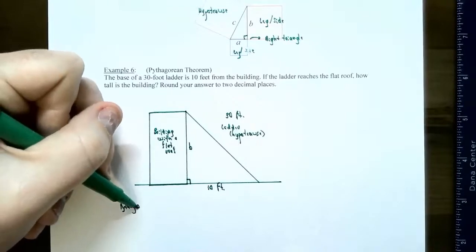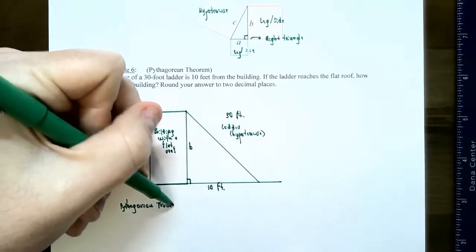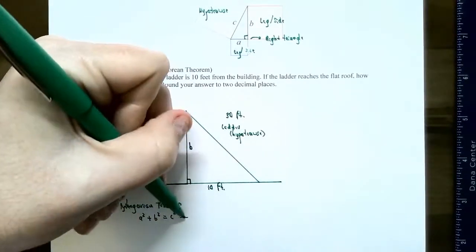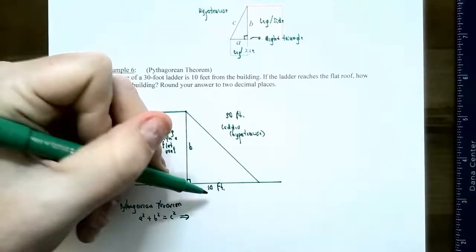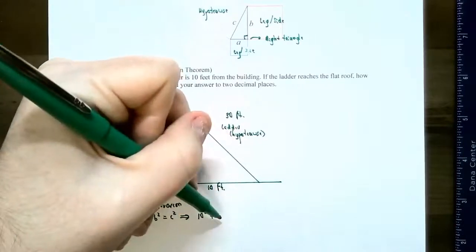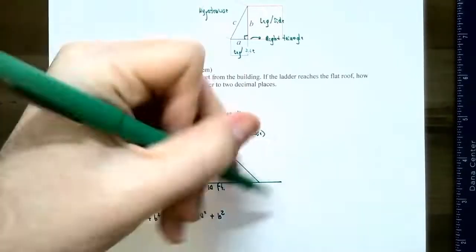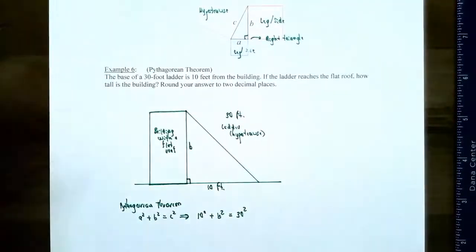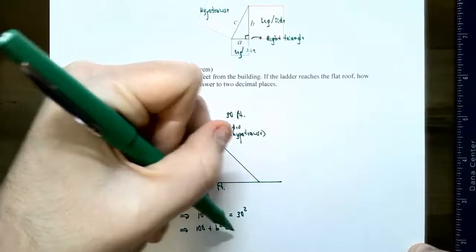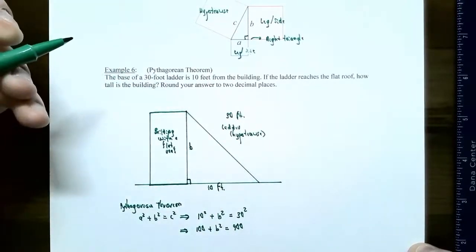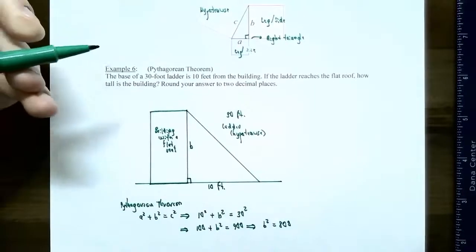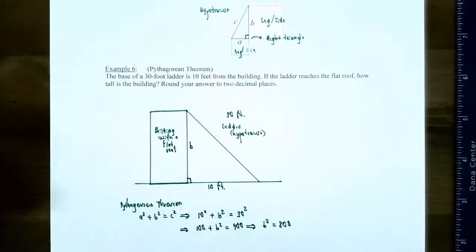Anytime you use a formula, write it down first. The Pythagorean Theorem says A squared plus B squared equals C squared. The A is 10 feet — so 10 squared. B is the height of the building — B squared. And it equals the hypotenuse squared, which is 30 squared. Simplifying: 10 squared is 100, plus B squared equals 30 squared, which is 900. Subtract 100 from both sides to get B squared equals 800. This is a quadratic equation because the variable B is raised to the second power.